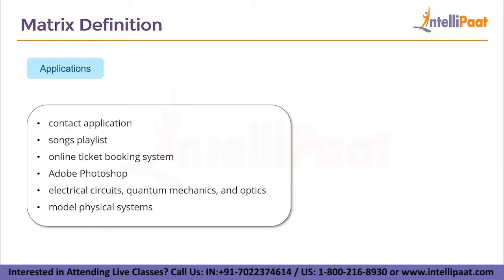The contacts application on our phones has a lot of contacts stored in the form of an array. When we add or delete a contact, it is similar to inserting or deleting from an array. The songs playlist in a music player also uses the matrix data structure. Online ticket booking systems — whether for flight booking or movie booking — also use matrices. If a user wants to book seat A9 in a movie theater, the array references it as seat[A,9] or seat[1,9].